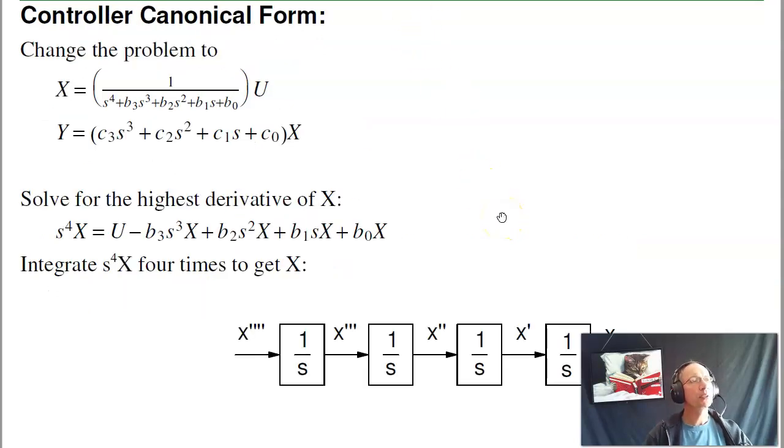The simplest, most straightforward, is controller canonical form. This is actually how MATLAB stores systems. If I have a transfer function, a generic third or fourth order system, I change the system. Come up with a dummy state called x that's 1 over the denominator polynomial times u. Then y will be the numerator polynomial times x. Cross multiply, solve for the highest derivative.